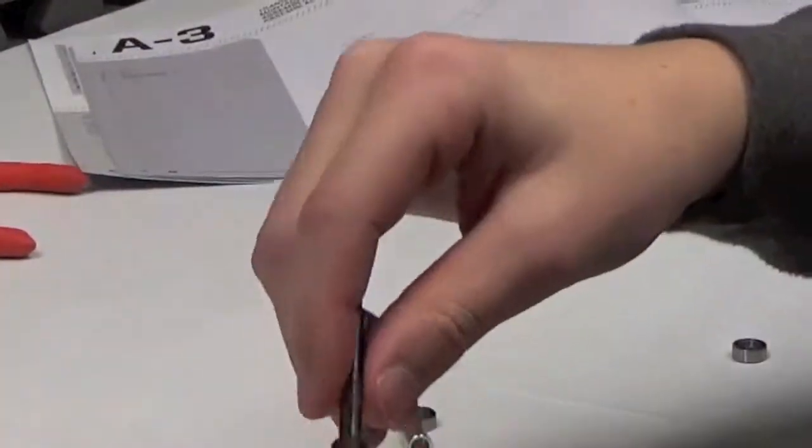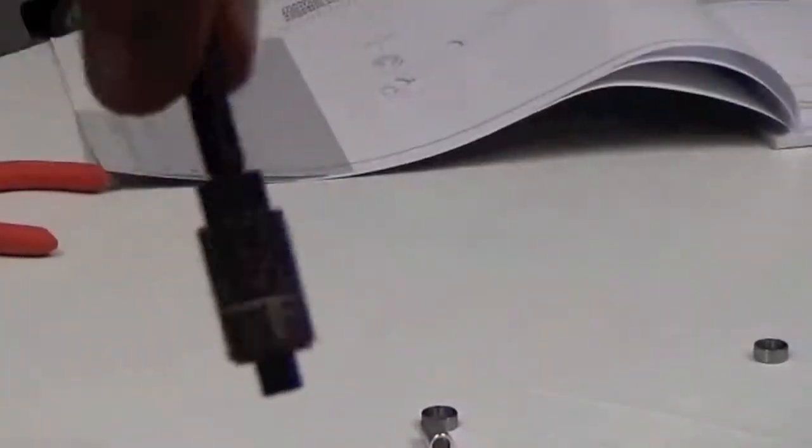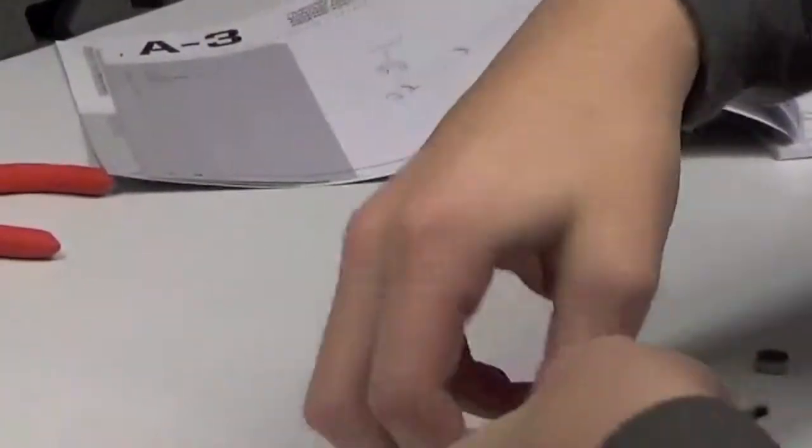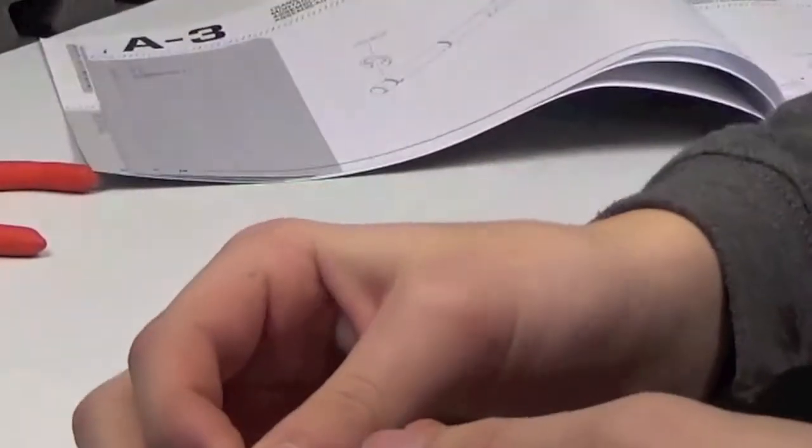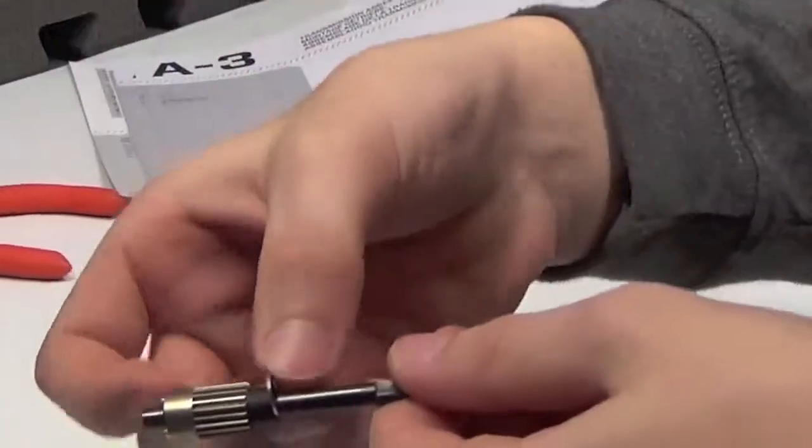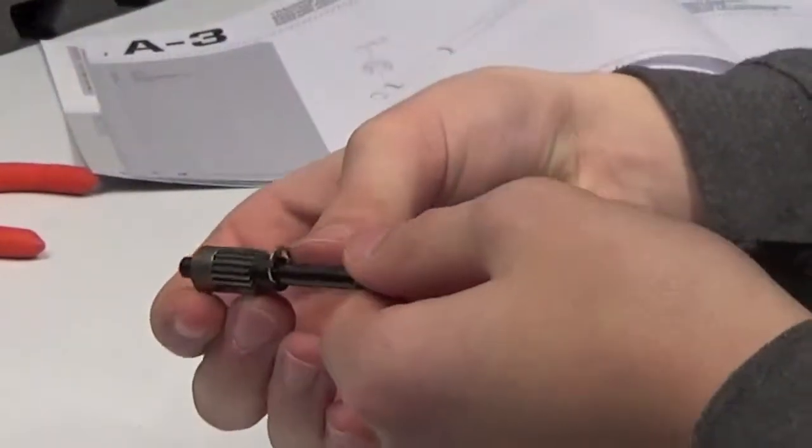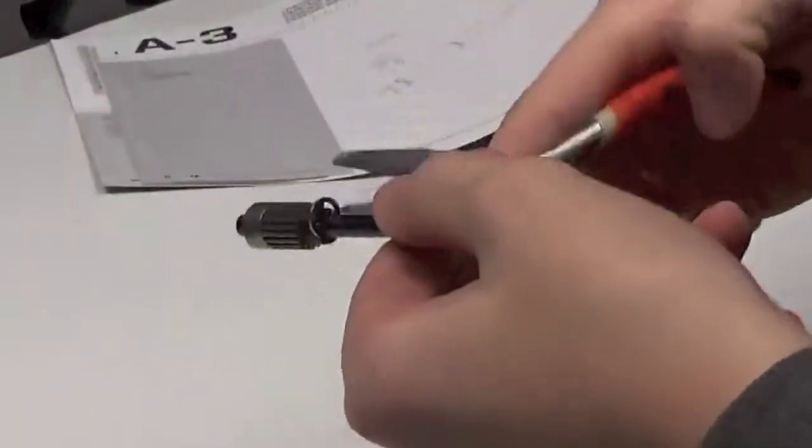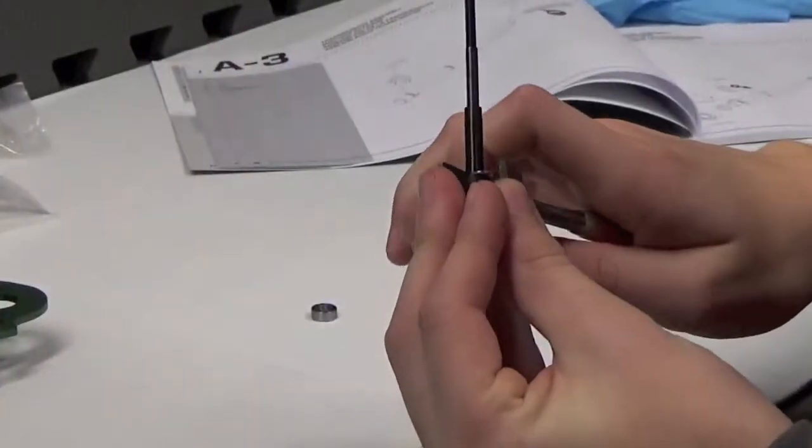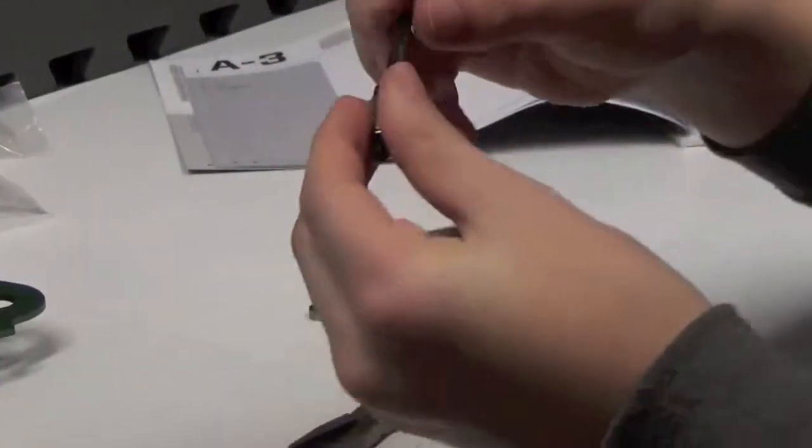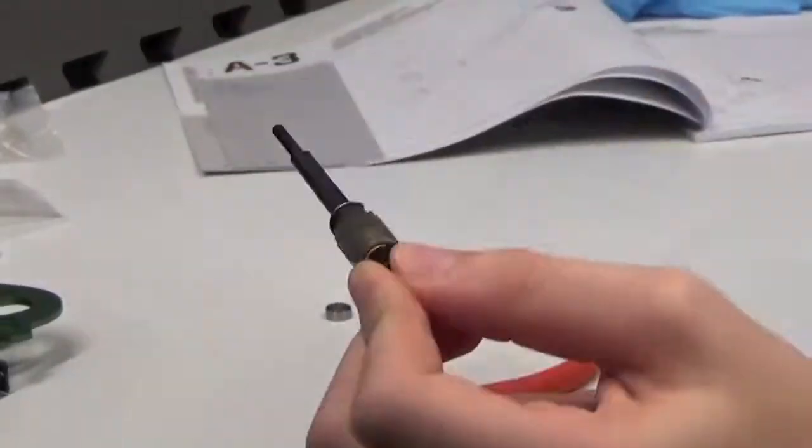Then take the black spacer, thread it on like that, and then we're going to take this E-clip and place it right here. All right, so now we have this shaft.